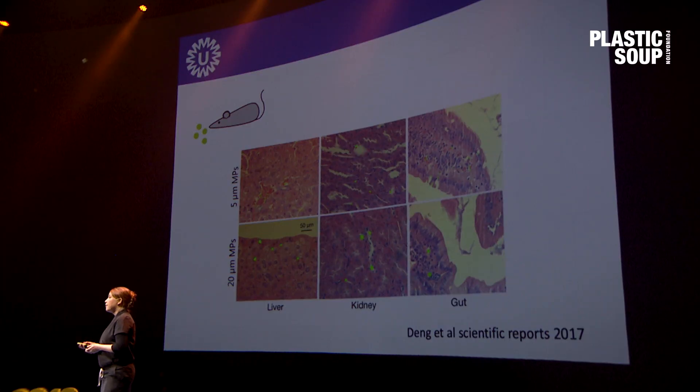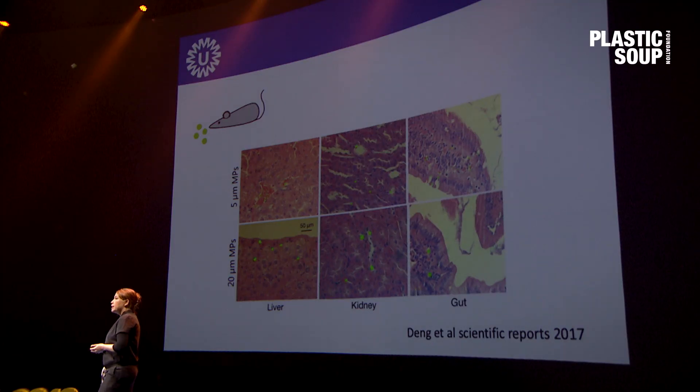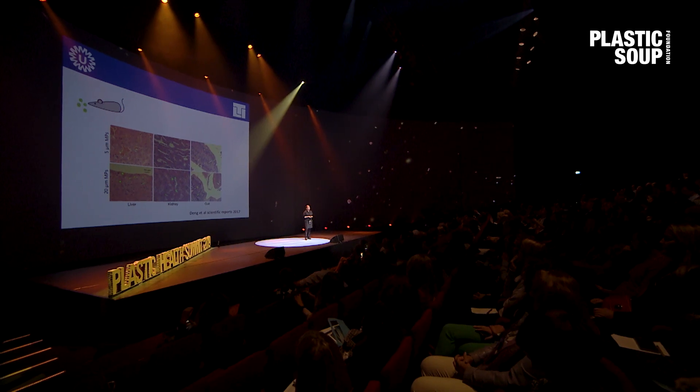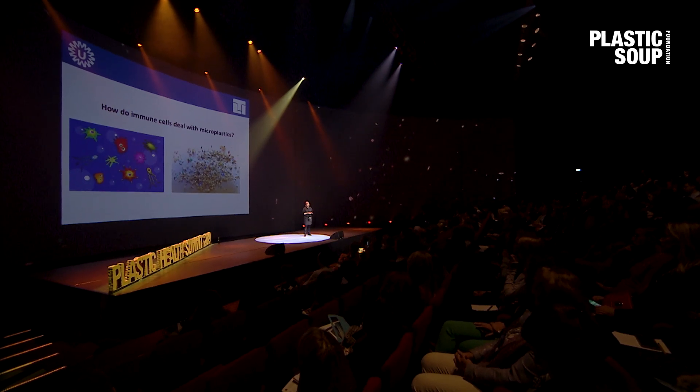But what now happens if in our bodies we have microplastics? Researchers before have already shown that if you orally administer microplastics to mice, these can end up in different organs. Here you can see that they end up in the liver, the kidney, and the gut. And it was a surprise to me that even the 20 micrometer microplastics ended up there — and 20 micrometers is actually bigger than a normal cell in your body. So even microparticles that are bigger than your cells are able to penetrate your body and enter the organs.